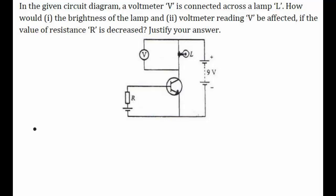Let's try to solve this question from the chapter semiconductors. In the given circuit diagram, a voltmeter V is connected across a limb L. The question is: how would the brightness of the bulb and the voltmeter reading V be affected if the value of the resistance R is decreased? Justify your answer.